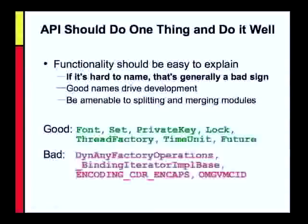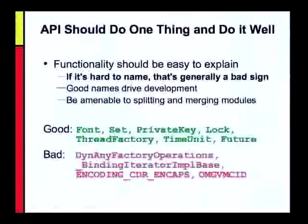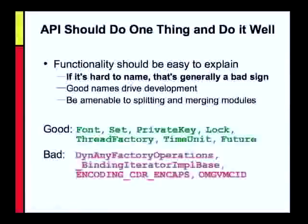Good API names are like Font, Set, PrivateKey, Lock, ThreadFactory — they instantly communicate what they are. Good names drive good designs: once you have something called a Set, you know the operations — you insert, remove, and test for containment. Bad names are an indication of bad designs, so listen to those names speaking to you. If you just can't get it to work out right, you're probably not trying to build something reasonable. Always remain amenable to splitting a module up if you're cramming too much into one, or to combining modules if you're exposing internal details that ought to be hidden.